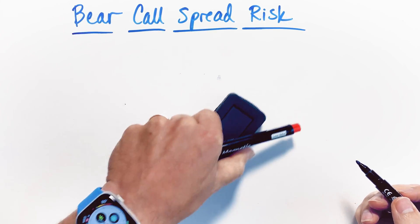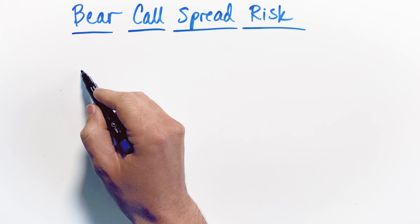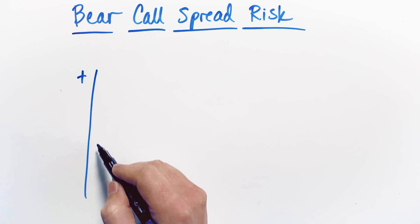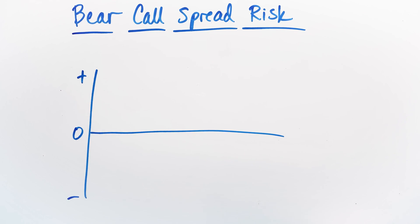I want to walk through how to exactly calculate the maximum risk on these bear call spreads, because I think sometimes people get really confused on how to calculate it, and it obviously leads to a lot of people making, unfortunately, dumb decisions with how they trade and how much capital they're putting at risk.